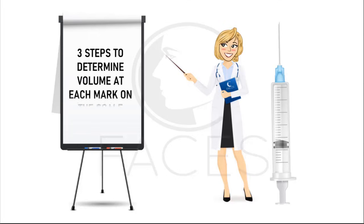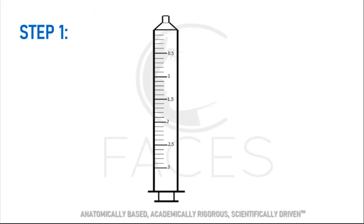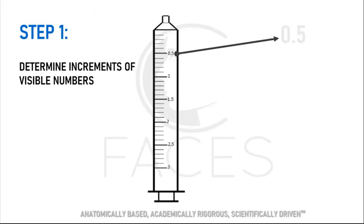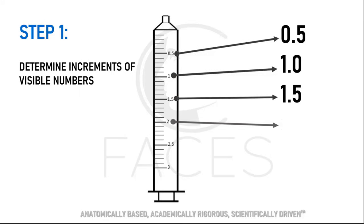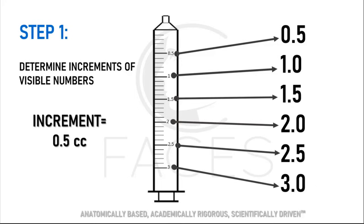I'm going to show you three easy steps to determine the volumetric value of each line on the scale. The first step is to look at the scale and determine the increments of the visible numbers. In this example, you can see that the increments are in half cc or half milliliter increments.